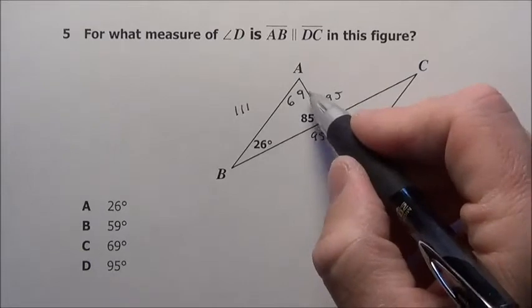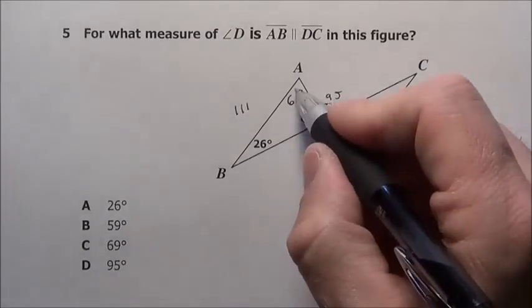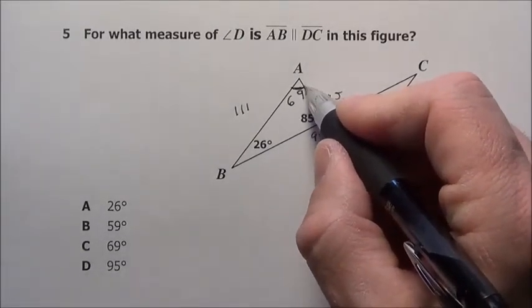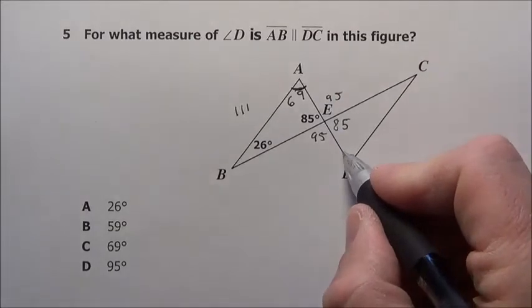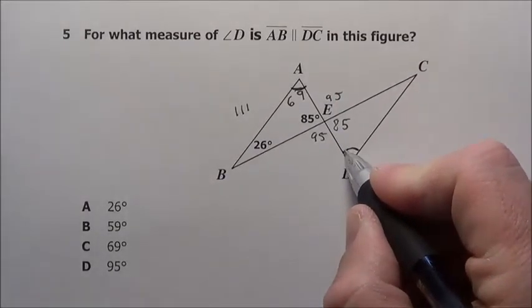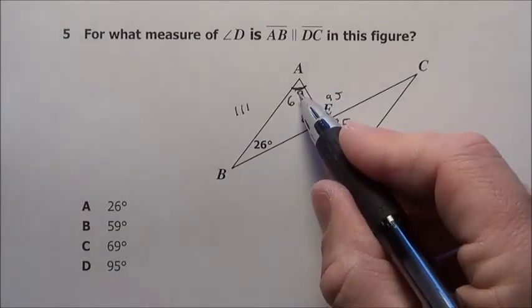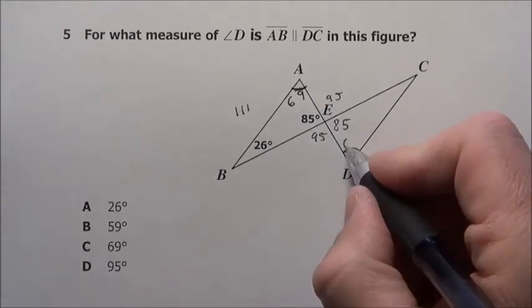Now, if this and this are parallel, we know this angle right here is going to be the same down here. So if that's 69, this angle down here is 69.